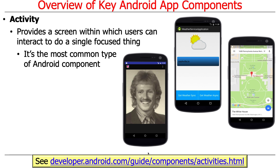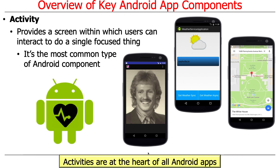Every app needs an activity. You don't necessarily need a service, a content provider, or a broadcast receiver, but you need an activity. That's typically what displays the main screen when you get into it. So here's like a Maps app, a weather app, an image download app. The activity is the thing you use to interact with stuff — you can think of activities as basically being the heart of all Android apps.